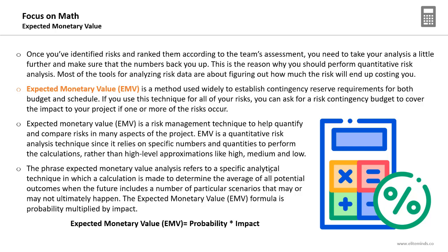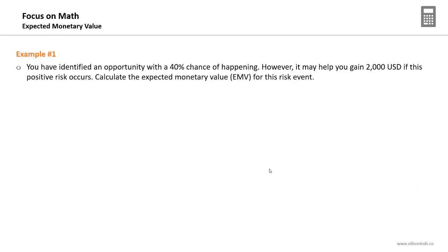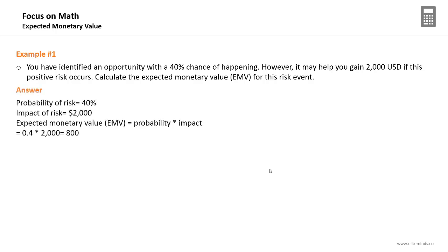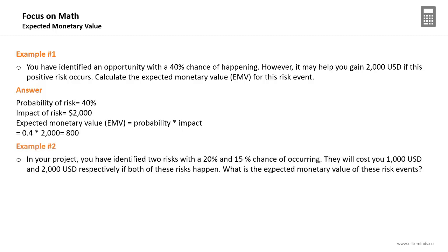The formula is simply: probability (in percentage) multiplied by impact (usually a budget or schedule figure). For example, you have identified an opportunity with a 40% chance of happening that may help you gain $2,000 USD. Calculating the EMV: 40% × $2,000 = $800 USD. Note that you must give a positive sign for opportunities and a negative sign for threats in the EMV formula.